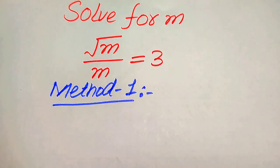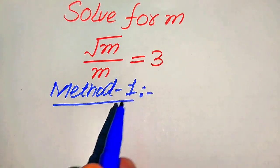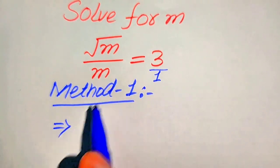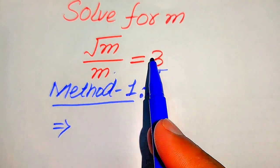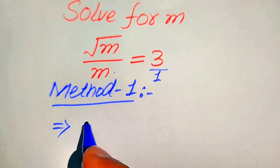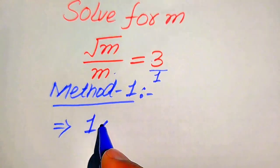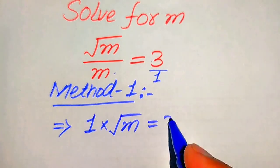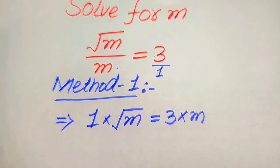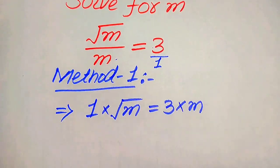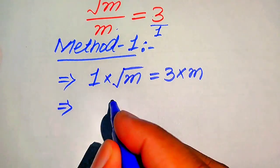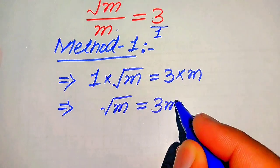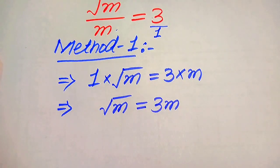In the first method, we need to cross multiply the terms. You see here the denominator of this term is 1, and when we cross multiply, we multiply this m with this 3 and this 1 with this square root of m. After cross multiplication, we get 1 multiplied by square root of m equals 3 multiplied by m.